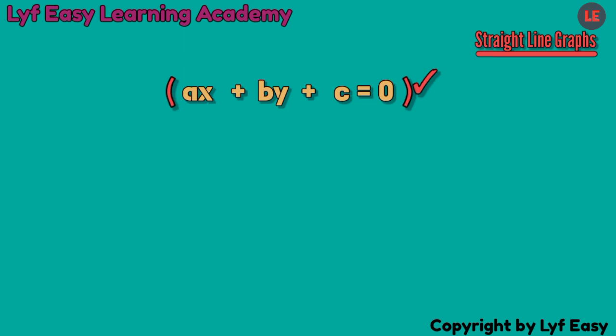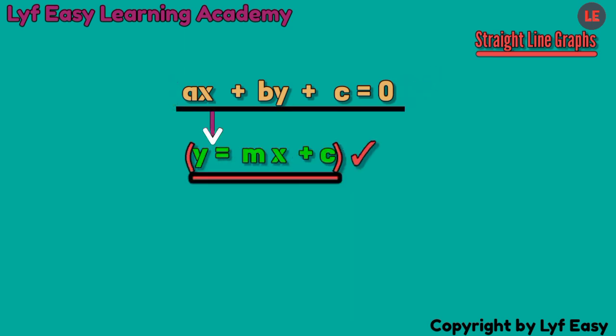This general equation can be rewritten in this standard form which is known as the gradient y-intercept formula. In this formula, this letter M is the gradient, or slope of the graph.